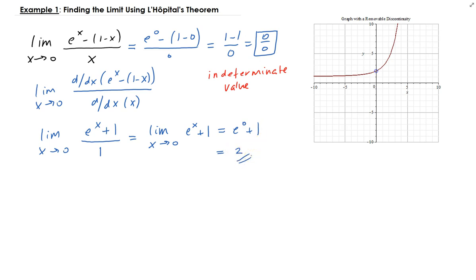That tells you that the original limit is equal to 2. Therefore, the limit as x approaches 0 of e^x minus 1 minus x over x is equal to 2.